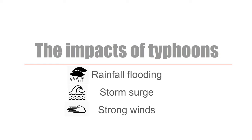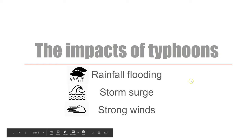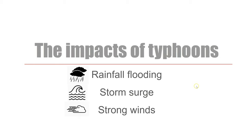So what does a hurricane or typhoon bring when it heads over? What are the impacts? There are three broad impacts we're going to look at: rainfall flooding, storm surge, and strong winds. We're going to go through these one by one, starting with rainfall flooding.